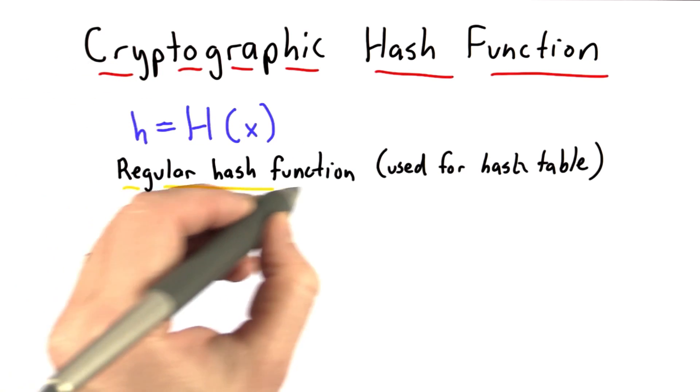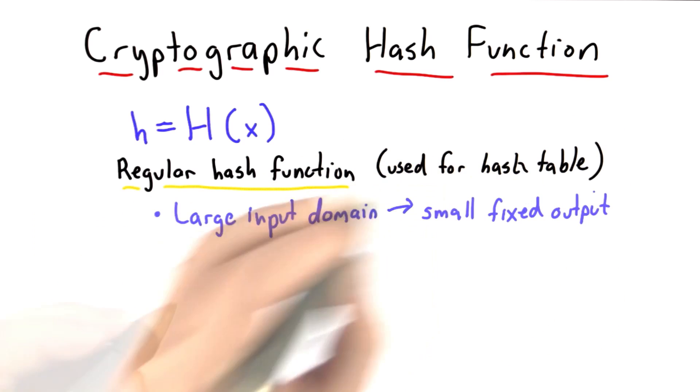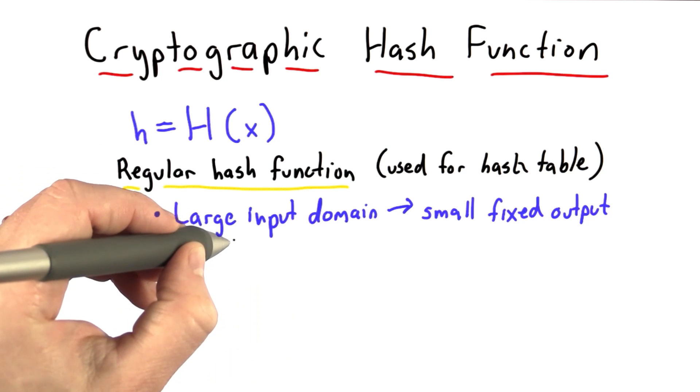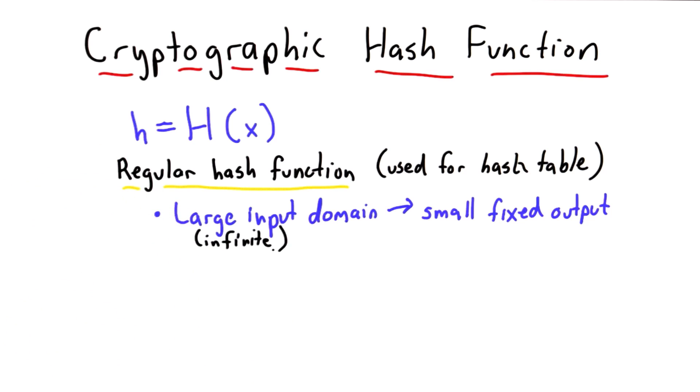This is similar to a regular hash function like we used in the hash table. It has the property that maps values from a large input domain, and by large here we usually mean infinite, such as all possible strings of any length, to a small fixed output size.